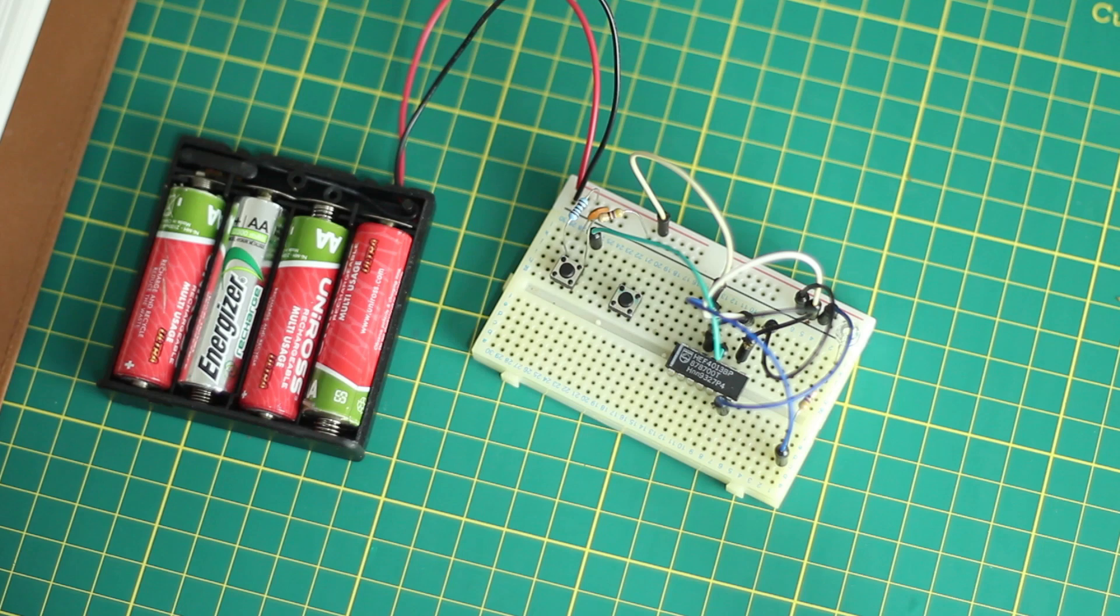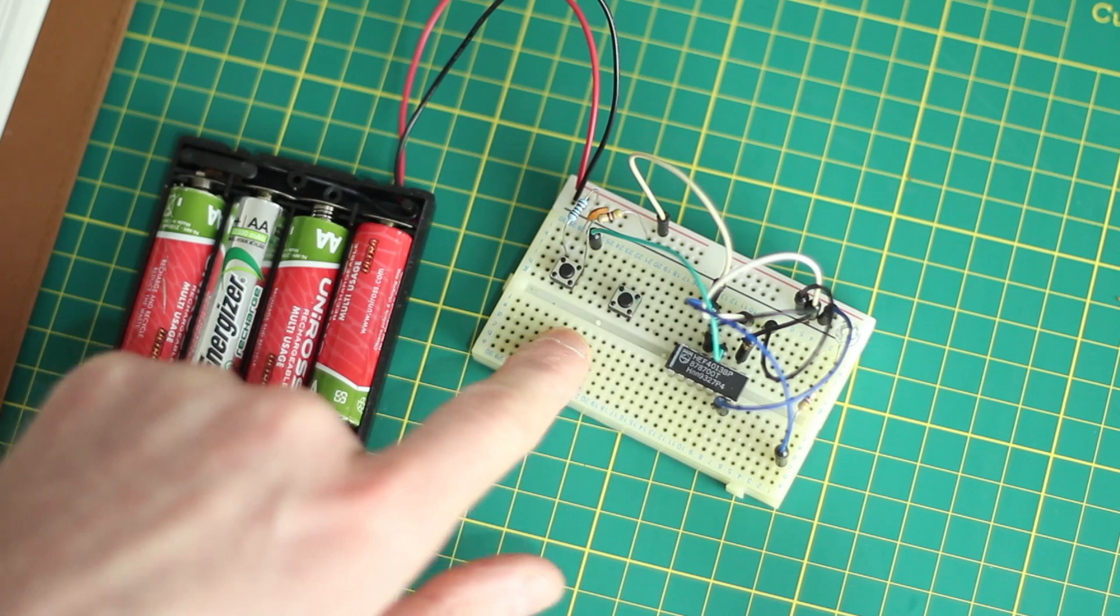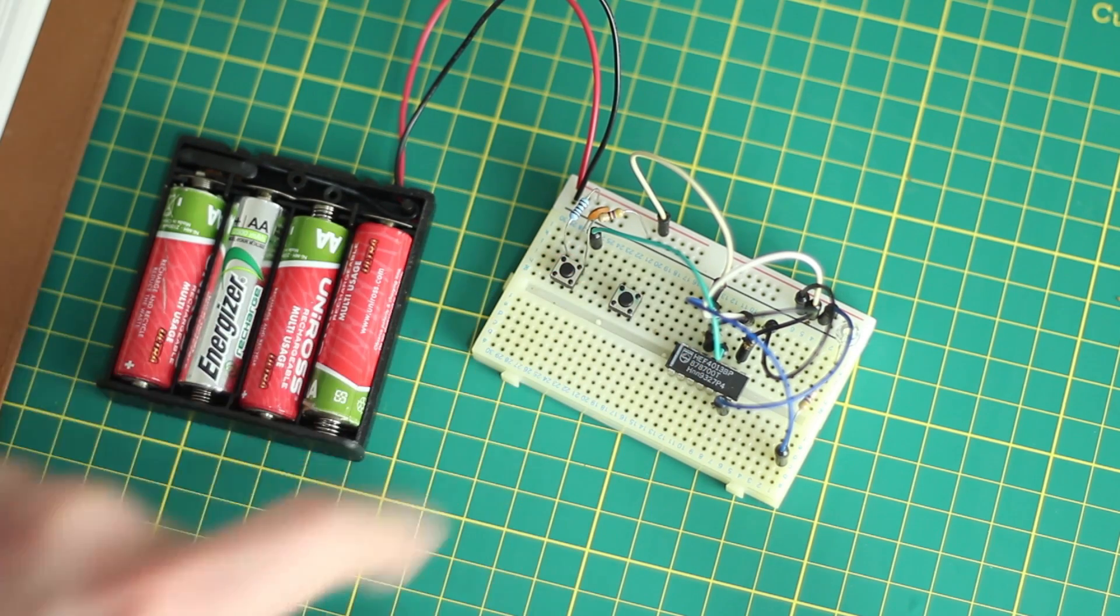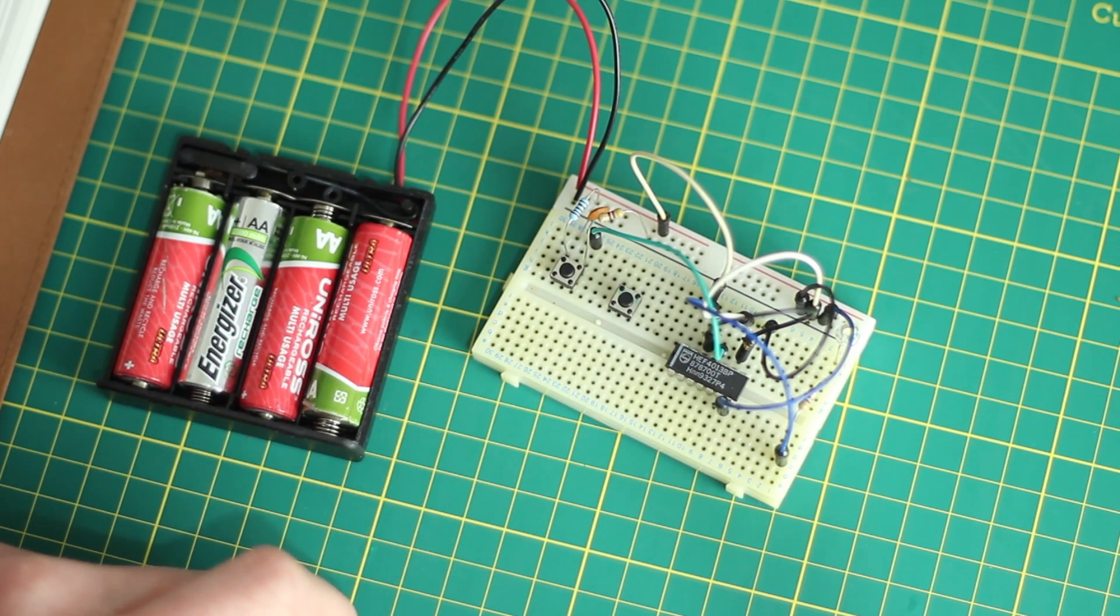...what we're using this as is an on-off switch. So it has two states that you can change it into, and each time you clock the chip using our little button there, we change the state of the output.